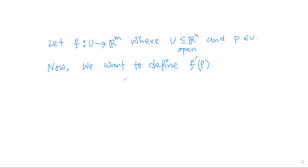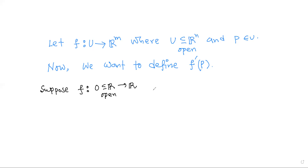We know from calculus that if we have a function from R, or any open subset of R, to R, then we know the definition of the derivative at some fixed point. We'll start from there to get an idea of how to generalize. Suppose f is a function from an open set O, a subset of R, to R, and p belongs to that open set.